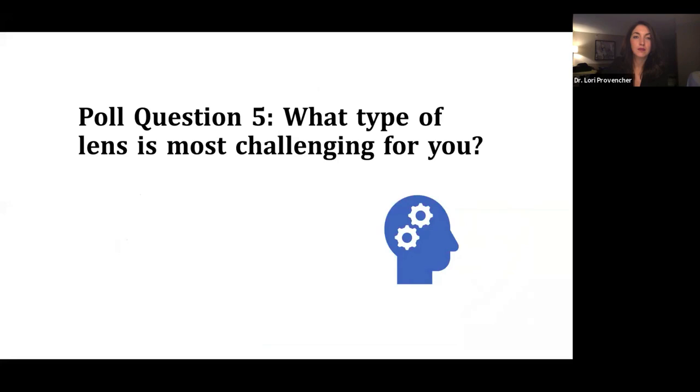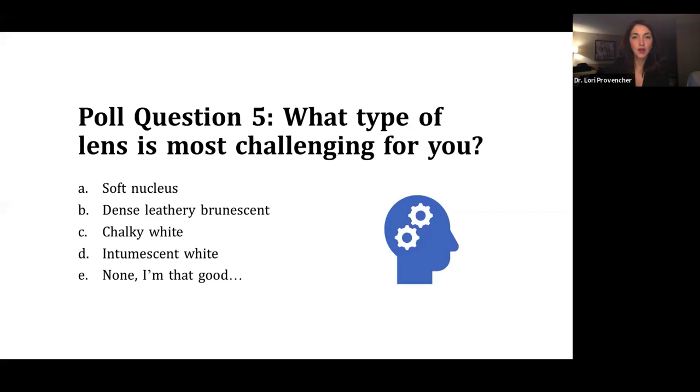And we'll do one more poll question before we go on to nuclear disassembly. What type of lens is most challenging for you? Is it a soft nucleus, a dense leathery brunescent lens, a chalky white lens, intumescent lens, or is no lens challenging for you? We've got about 31% that say a soft lens is challenging, 31% saying a dense leathery brunescent lens is challenging, and then 28% say intumescent white cataracts are challenging.